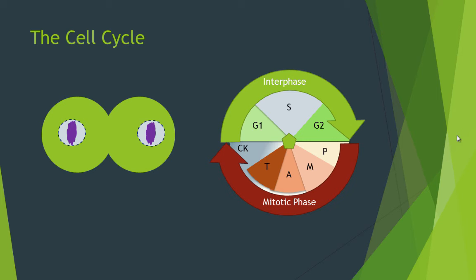Cytokinesis completes the division of a cell by splitting the cytoplasm to form two daughter cells. Along the middle, a cleavage furrow appears and pinches the cell apart. This process began in late anaphase and continued through and beyond telophase.